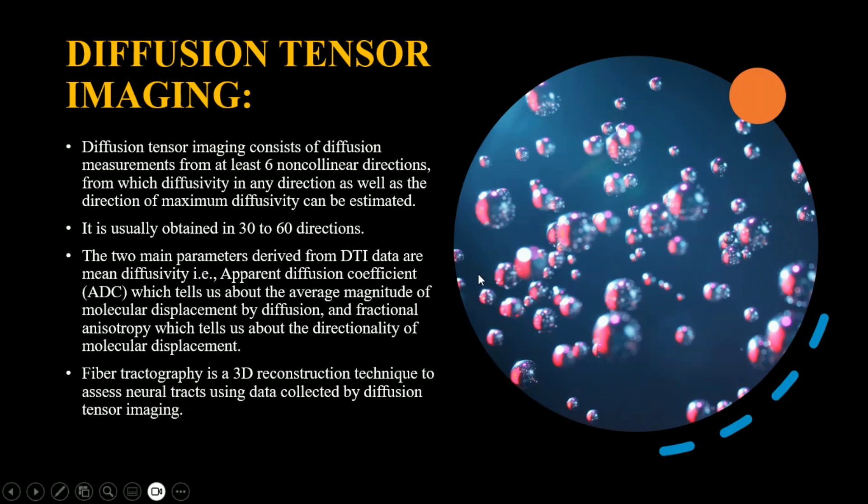Diffusion tensor imaging consists of diffusion measurements from at least six non-colinear directions, from which diffusivity in any direction as well as the direction of maximum diffusivity can be estimated. It is usually obtained in 30 to 60 directions. The two main parameters derived from DTI data are mean diffusivity, such as apparent diffusion coefficient, which tells us about the average magnitude of molecular displacement, and fractional anisotropy, which tells us about the directionality of molecular displacement. Fiber tractography is a 3D reconstruction technique to assess neural tracts using data collected by diffusion tensor imaging.